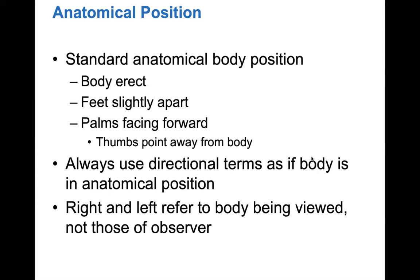Now we'll talk about anatomical terms, specifically anatomical position, which is also the first lab exercise. Anatomical position is when the body is erect, feet slightly apart, and palms facing forward with thumbs pointing away from the body. You can assume any image is given in anatomical position unless otherwise noted. Always use directional terms as if the body is in anatomical position, and right and left refer to the body being viewed, not the observer.